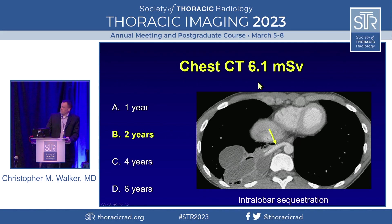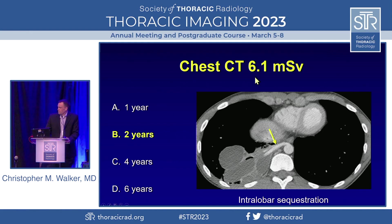This is a chest CT, which has a dose of around 6.1 millisieverts, which for normal background radiation is about two years of dose. And another congenital lesion — this is an intralobar sequestration. You can see this large feeding artery arising from the descending thoracic aorta supplying this area of sequestered lung.